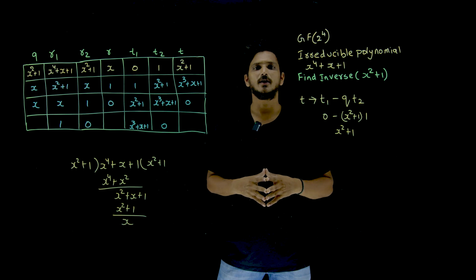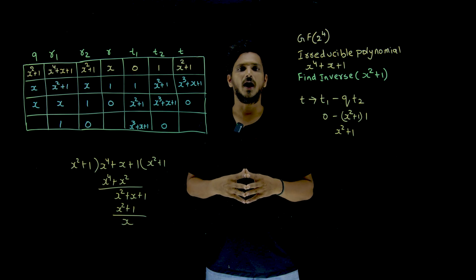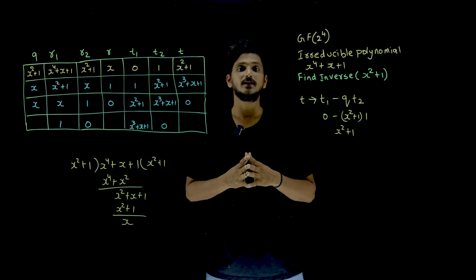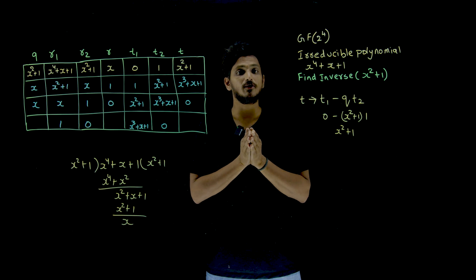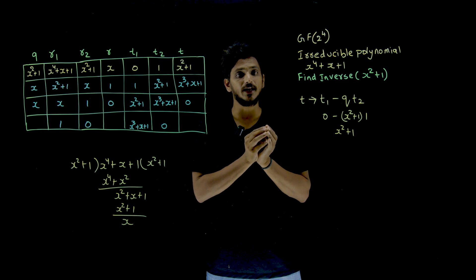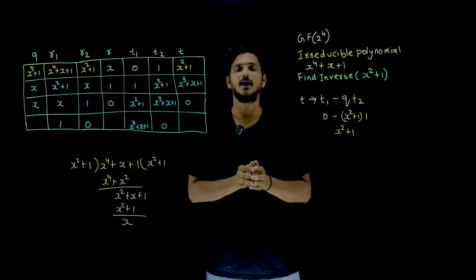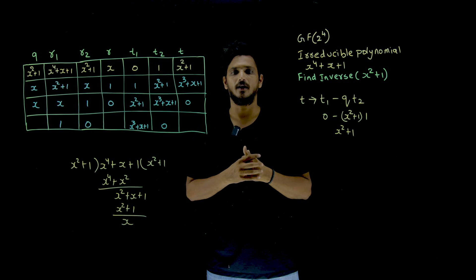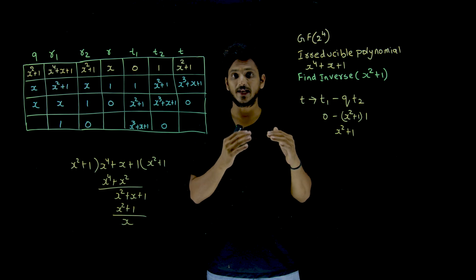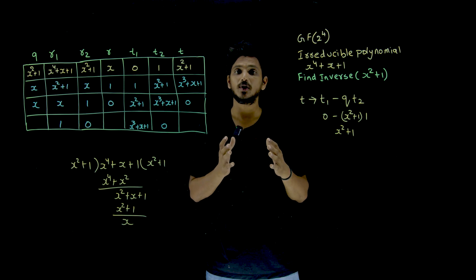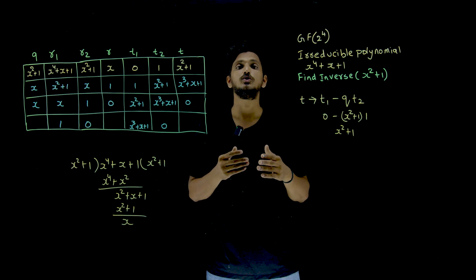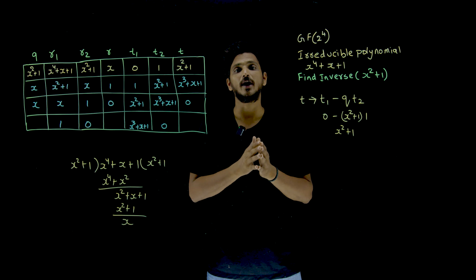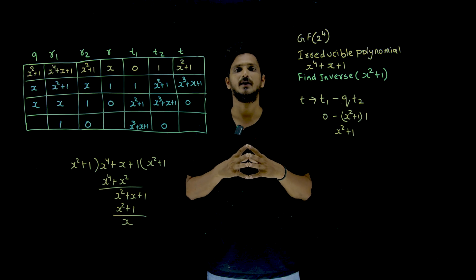Hi, welcome to Learning Monkey. I am Raghur. In this class, we will discuss about how to find the inverse of a given element in GF(p^n). We will take an example and understand. Here we are going to use the Euclidean algorithm method to find the inverse of the given element.